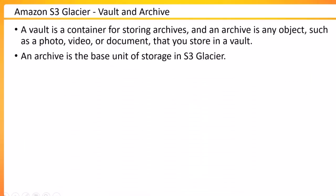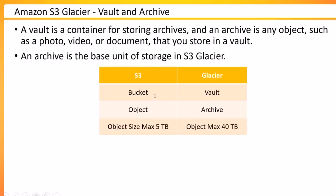In Glacier, the concept is something called a vault. A vault is a container for storing archives. An archive could be any object — a document, a video, or a photo — that you store into a vault. The base unit of storage is the archive. Comparing to S3: in S3 the container is called a bucket, here it is called a vault. In S3 files are called objects, here they are called archives. In S3, object size can be maximum 5 TB, but Glacier allows up to 40 TB per archive.